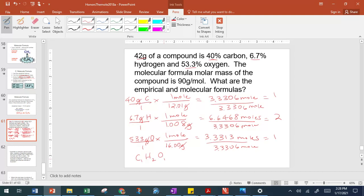So now we're going to find the molar mass of this empirical formula. So we have 12.01 plus 2 times 1.008 plus 16, and that gives us 30.026 grams per mole. If we take 90, divide by 30.026, that gives us 3. So our molecular formula would be C3H6O3.